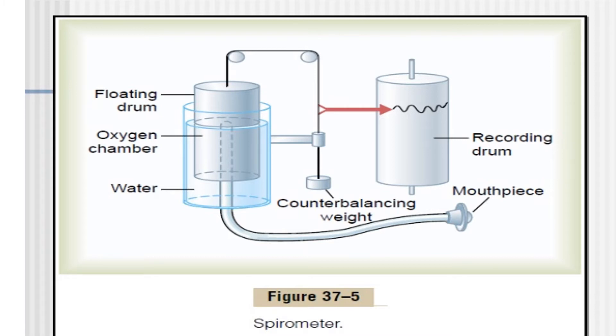Whenever the person, after taking deep inspiration, expires the air through the mouth tube, that floating drum will be connected with the indicator as well as recording drum. It will record on the drum according to the efficacy of the person's inspiration or expiratory effort.